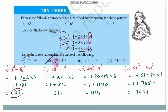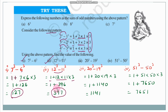Next, find the value of 12³−11³. Applying the formula: 1 + 12×11×3 = 1 + 396 = 397. So the answer is 397.